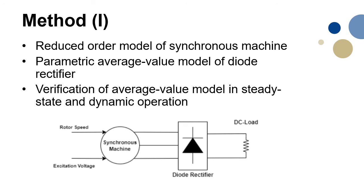This work consisted of creating a detailed machine converter model in Simulink, which acted as a reference for the average value model of the system. The simplified average model was implemented by a 6th order state space model of the synchronous machine, as well as a parametric average value model of the diode rectifier.